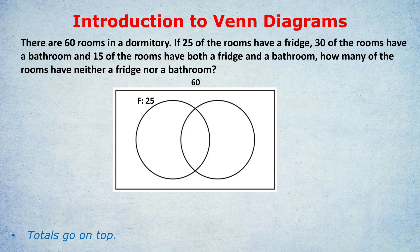15 of the rooms have both a fridge and a bathroom — that goes in the middle, in the overlapping section. Now here's the beauty of a Venn diagram: without any formula or table, we can start filling it in. The total for the fridge bubble is 25, and we know the overlapping section has 15. So how many rooms have a fridge but not a bathroom? 25 minus 15 is 10. There are 10 rooms with a fridge but not a bathroom, and this is how you start filling in the Venn diagram.